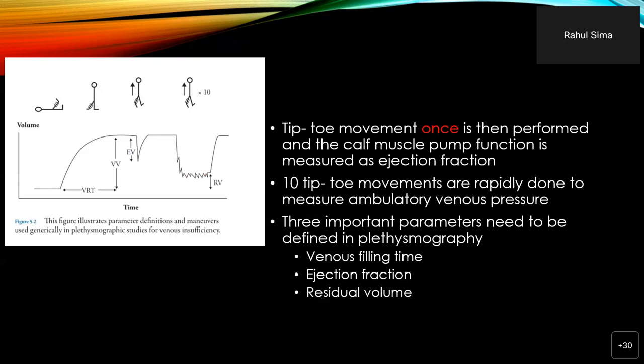The figure on the left illustrates the venous refill time and patient position. When supine, pressure is almost zero. When the patient stands, there is a time taken for venous filling. At the plateau, venous volume of the limb is recorded, and on one tiptoe movement the ejection volume is recorded. The 10 tiptoe movements and the lowest pressure recorded represent the ambulatory venous pressure, from which the residual volume can be calculated.